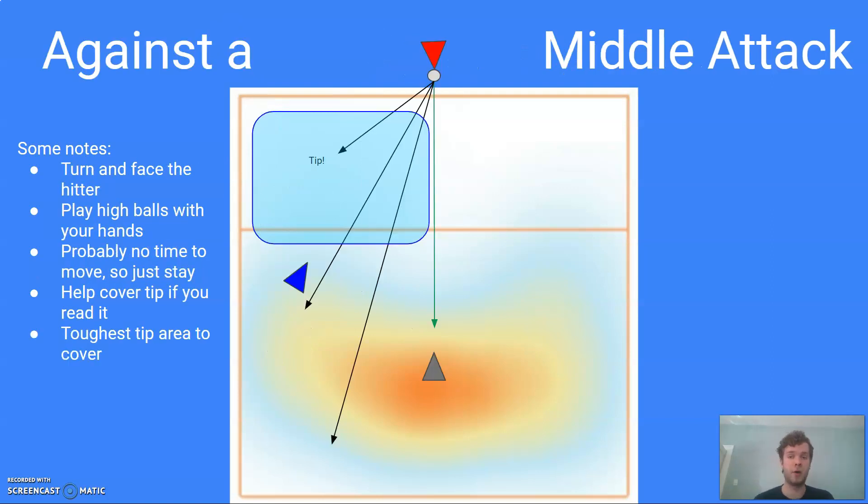So we're not going to get so deep down the line that we could play any ball hit down the line with our platform, because if we get that deep, they can just tip every time or even some hitters are going to be able to hit so short that we won't be able to dig them at all. So we want to stay where we are. And if hitters hit high, we go up with our hands and play those balls with our hands.